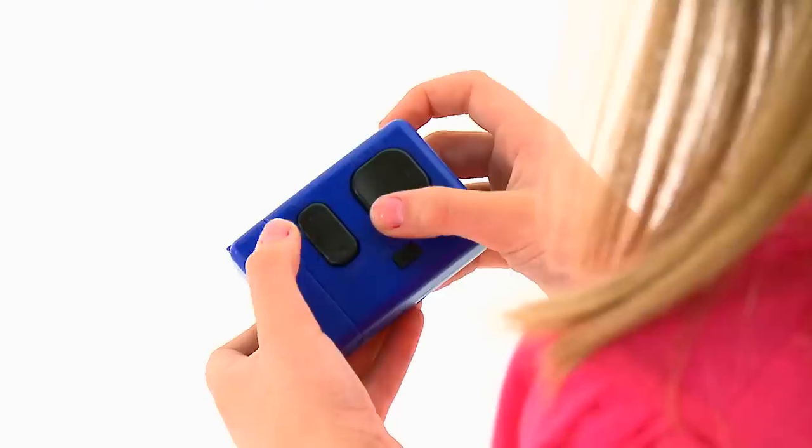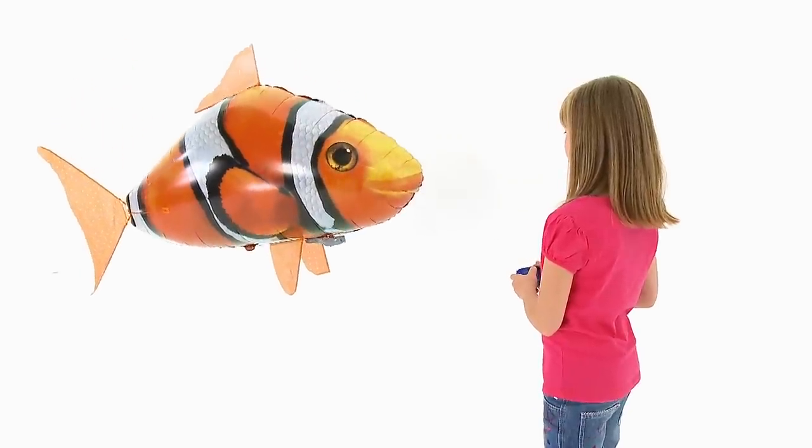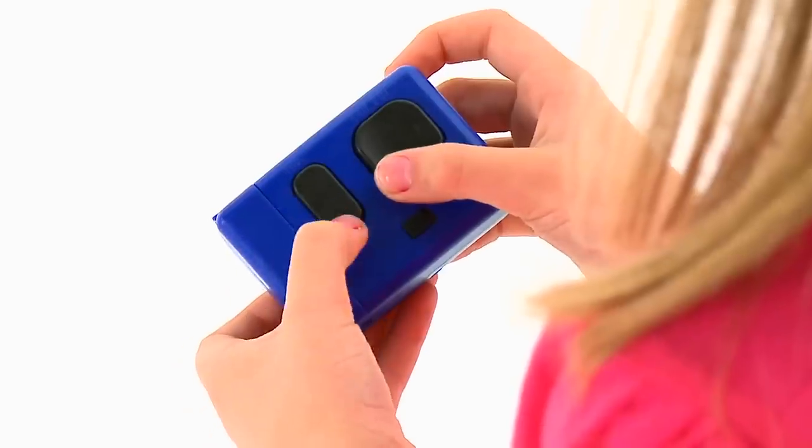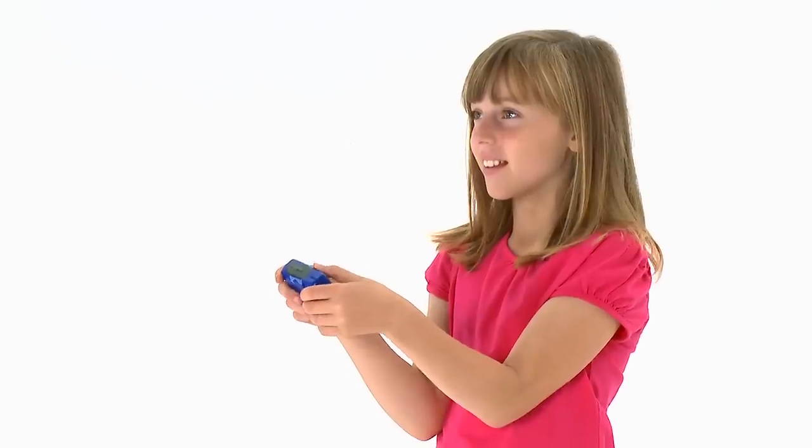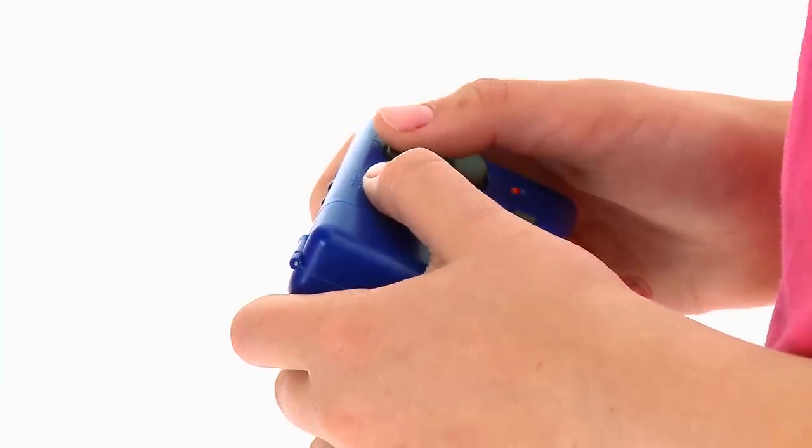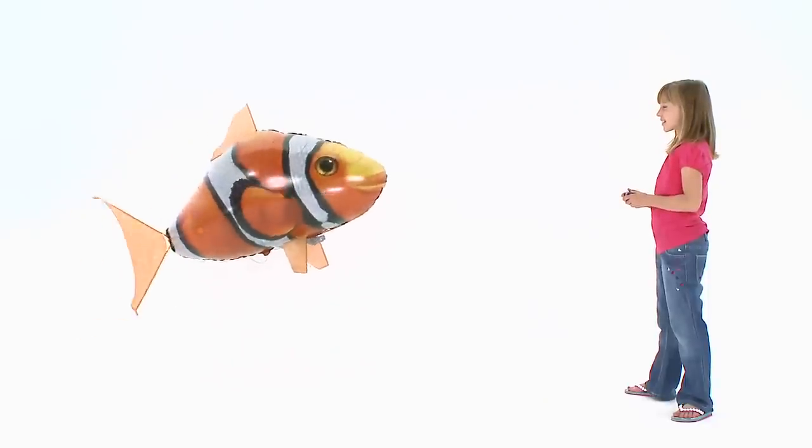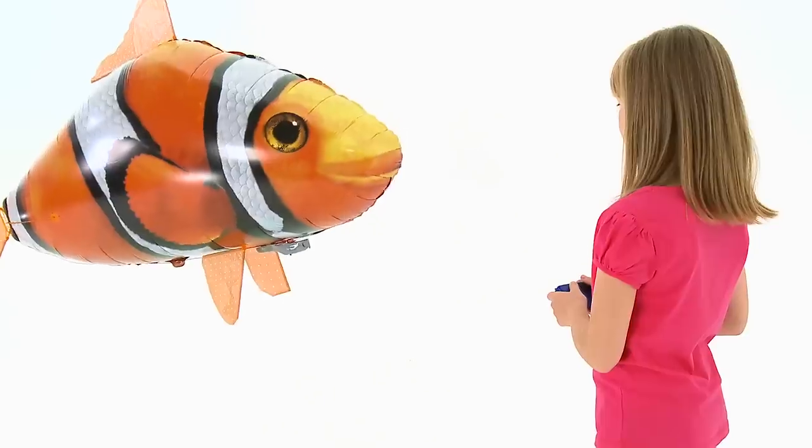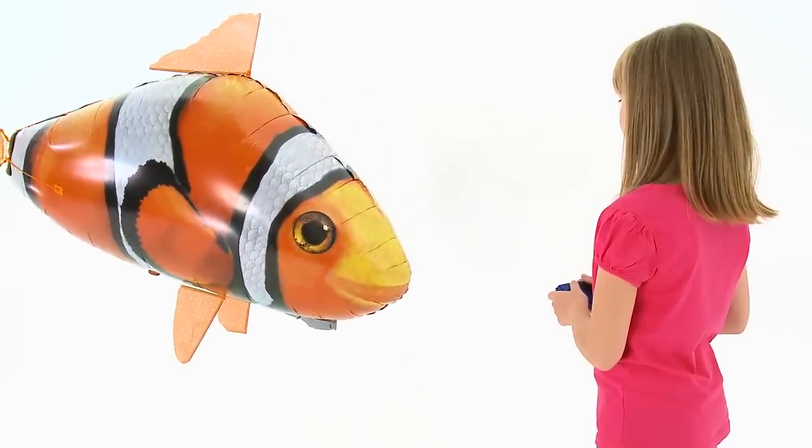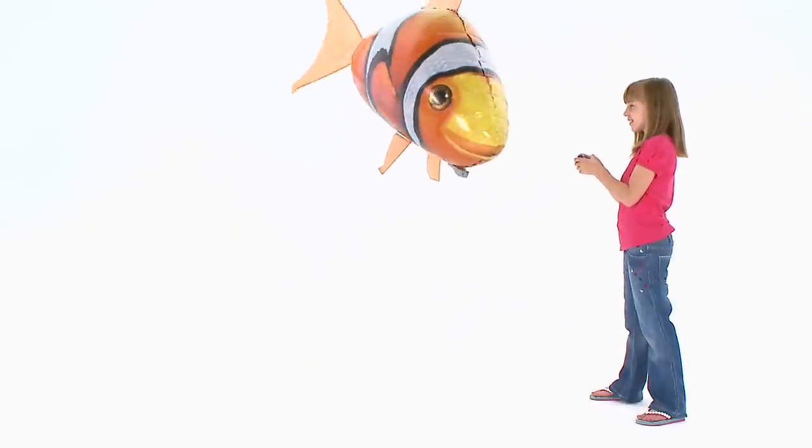To make your Airswimmer move upward, the pod must move backward along the track. To do this, you need to press down on the remote, and the nose of your Airswimmer will begin to point upwards. This will feel unnatural at first as you are pressing down to move upward, but you will soon get the hang of it. To move your Airswimmer downward, the pod must move forward along the track, so you need to press up on the remote. Then, just swim your Airswimmer forward using the tail control.